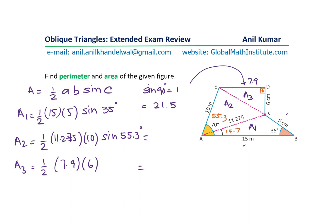The next one: 0.5 times 11.275 times 10 times sine of 55.3, and that is 46.34. The last one here is 0.5 times 7.9 times 6, and that is 23.7.